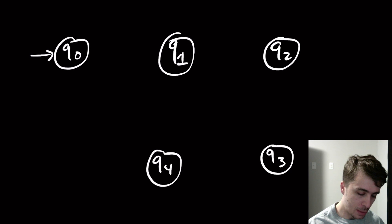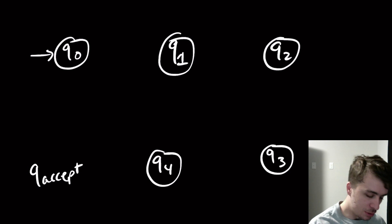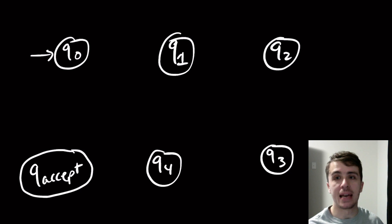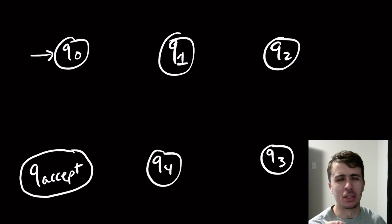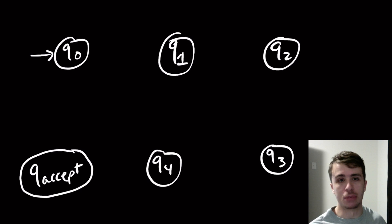So I'm going to have these six states. Remember that there's a q_accept state and a q_reject state in a Turing machine. The thing to mention is that the accept and the reject state have to be different states, for obvious reasons.